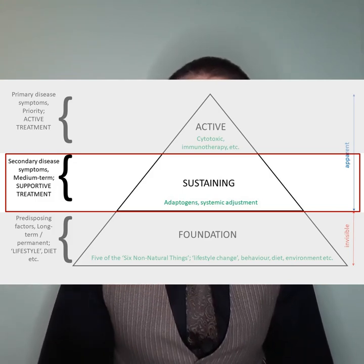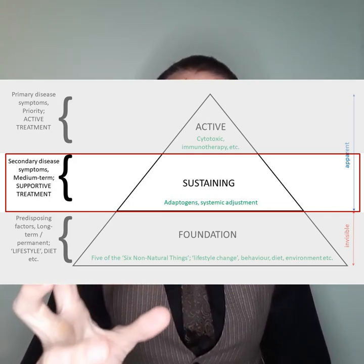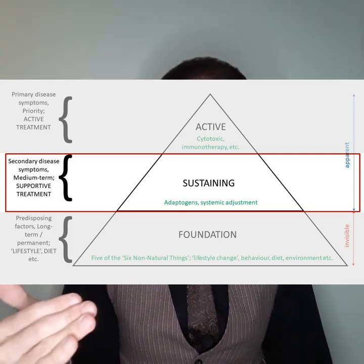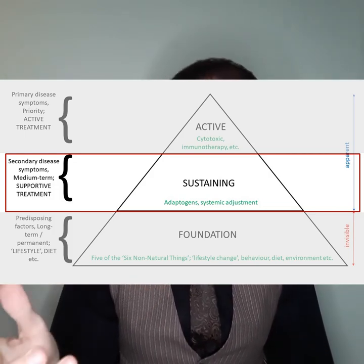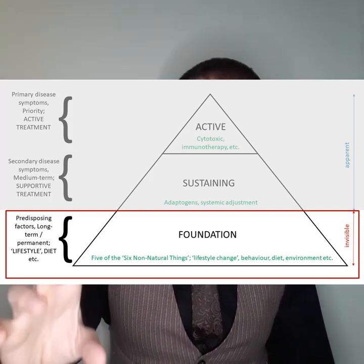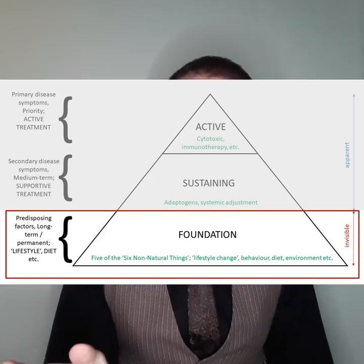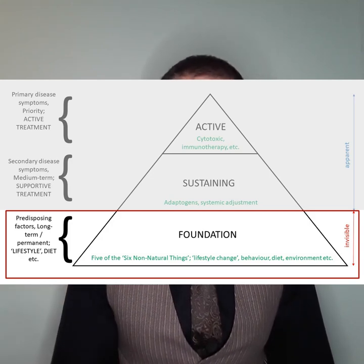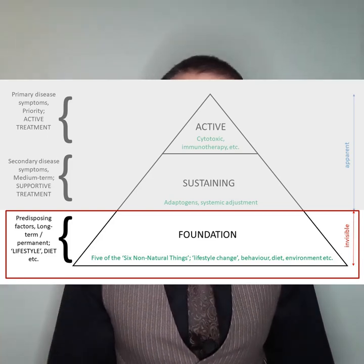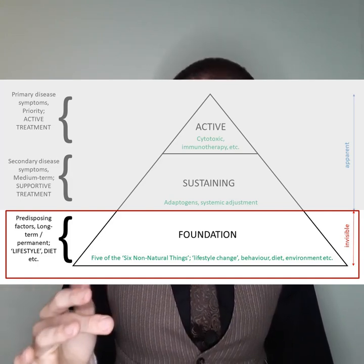In terms of treatment, the sustaining layer looks at adjusting factors which sustain the growth of the cancer or predispose to it. The bottom level of the pyramid is the foundation level, and this is invisible. In terms of the disease it represents predisposing factors — those elements which contributed to the disease in the first place: risk factors, behaviours, things like that. In terms of treatment, these are really lifestyle and adjustment things.